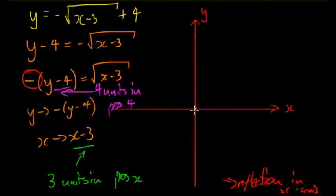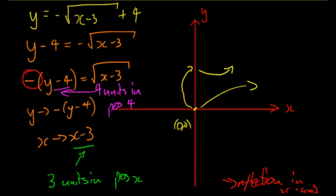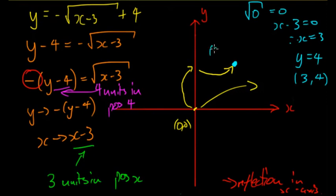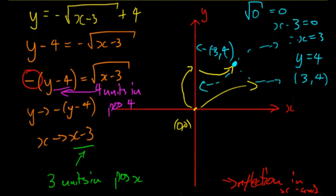Graphically, the original zero zero has been moved up four units and across three units. A quick way to find the endpoint is to let whatever is inside the square root equal zero. Setting x minus three equal to zero gives x equals three. Substituting in gives y equals four, so the endpoint is three four. The graph could look several ways from this point.